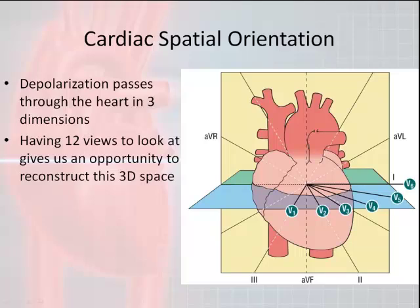To get this three-dimensional space, we look at the hexaxial leads: 1, AVL, 2, 3, and AVF. AVR also — I'll talk about AVR because a lot of people question why we even have it. Those six leads will give you an up-down and left-right direction of depolarization. We can use V1 through V6 to determine an anterior-posterior, or front-back, depolarization pattern, but today we'll focus on the up-down and left-right depolarization using the hexaxial leads.